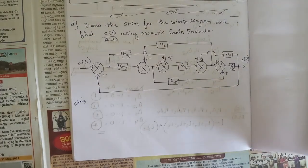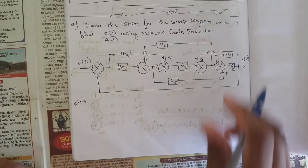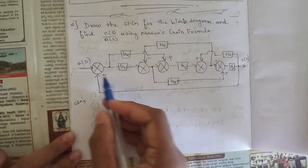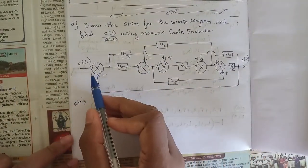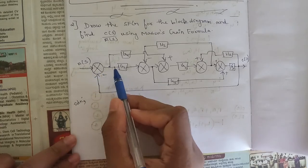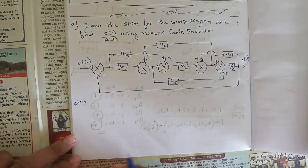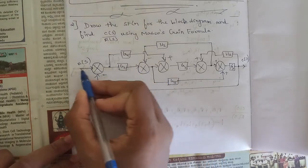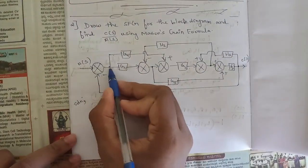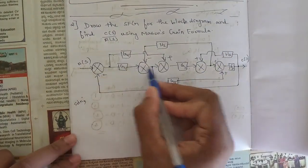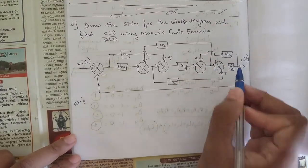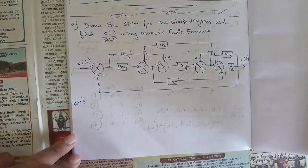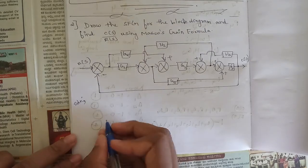First, let's draw the signal flow graph. Wherever there are summing points and takeoff points, convert all of them into nodes. In this block diagram we have nodes 1, 2, 3, 4, 5, 6, 7, 8, and 9. So we need to draw 9 nodes first.